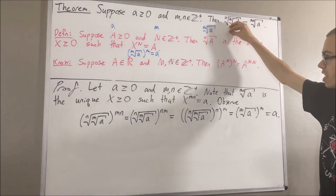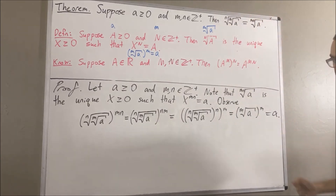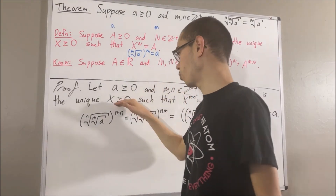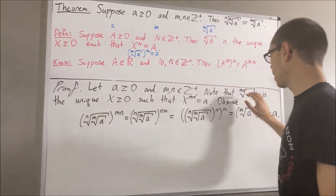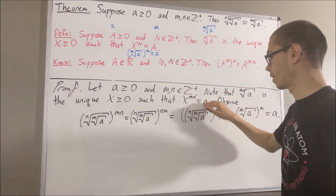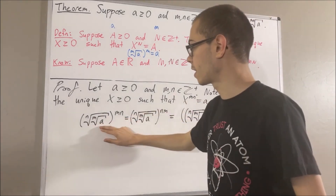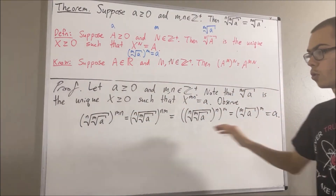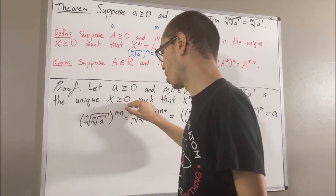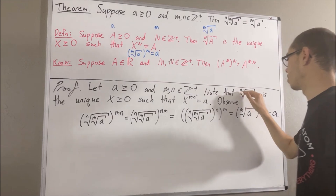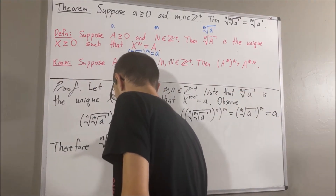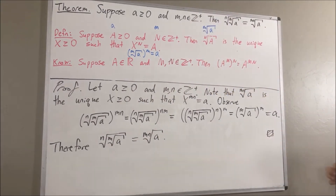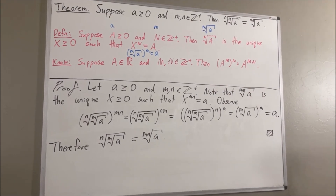Well, we just showed that if we take the nth root of the mth root of a and raise it to the power of m times n, we get a. And since the mn-th root of a is the only real number greater than or equal to zero with that property, the nth root of the mth root of a must equal the mn-th root of a. And so this completes the proof. That's it for this video.